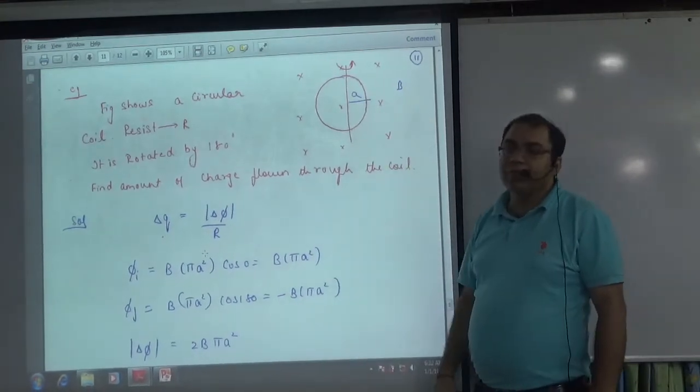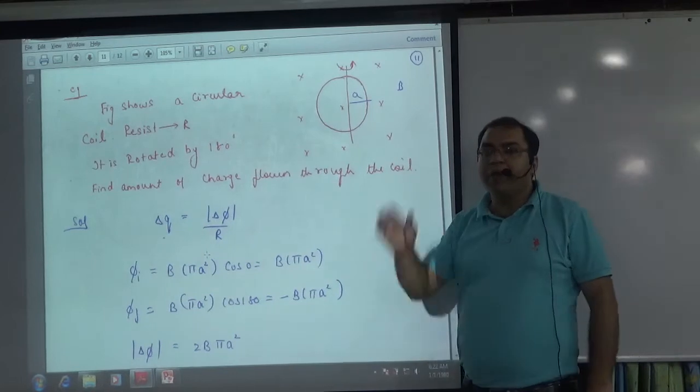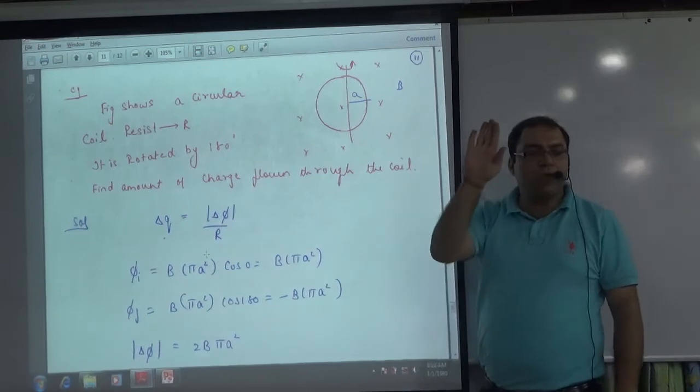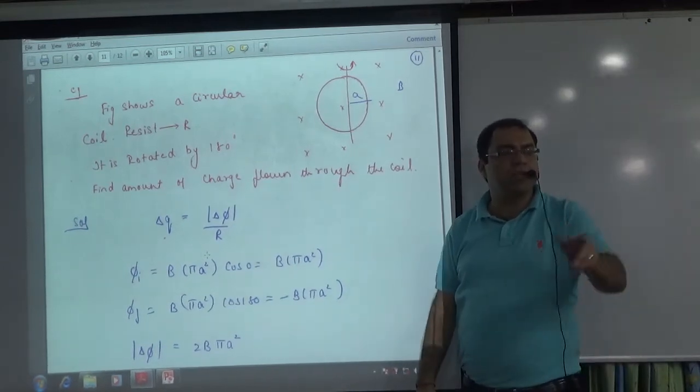The radius is A. The resistance is R. I rotated the coil 180 degrees. So when I rotated the coil 180 degrees, I want to find how much charge passed.